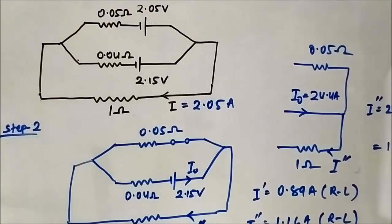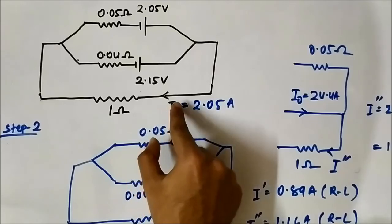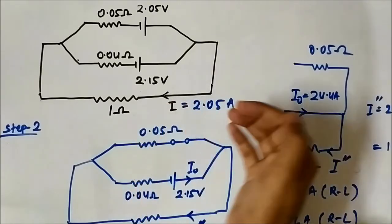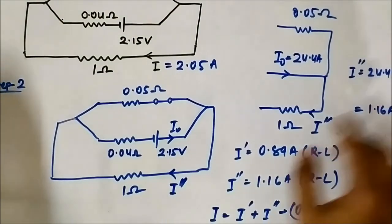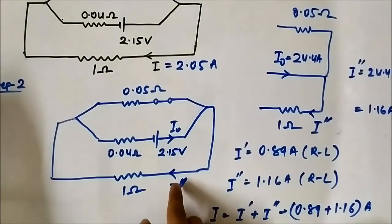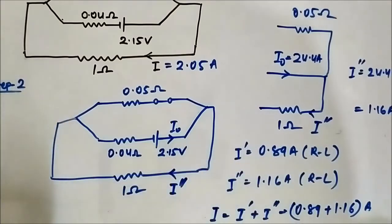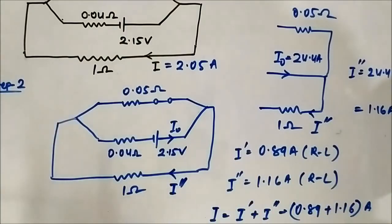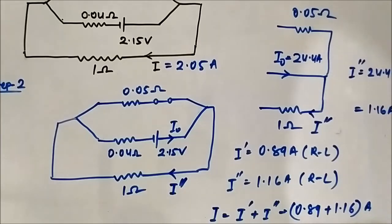Finally, add all individual responses together. An important thing is to take care of the polarity of voltage or direction of current mentioned in the question. Here, since all responses were in the same direction — right to left — we simply added them. If any response had been in the opposite direction, a minus sign would apply. This is the third question on superposition theorem. Please subscribe to Engineering Tutorial for more videos on electrical, electronics, instrumentation, and communication engineering. Thank you.